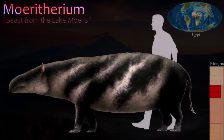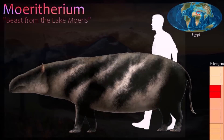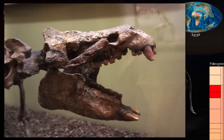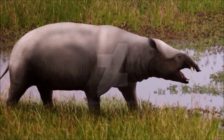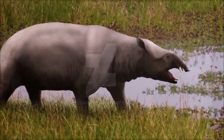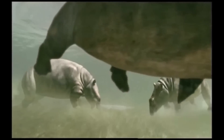Moeritherium was one of the earliest fossil relatives of the proboscideans — the family that includes the elephants and mammoths. Its short proboscis made it look similar to a tapir. However, it also had short tusks like other members of the proboscideans, and many features of the skull and skeleton that show it is a proboscidean, not a relative of tapirs. Evidence suggests that the earliest proboscideans were semi-aquatic and that their lineage became fully terrestrial only later.